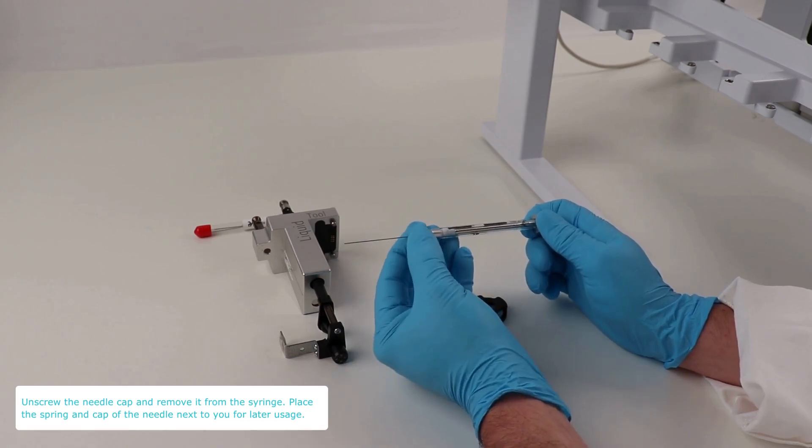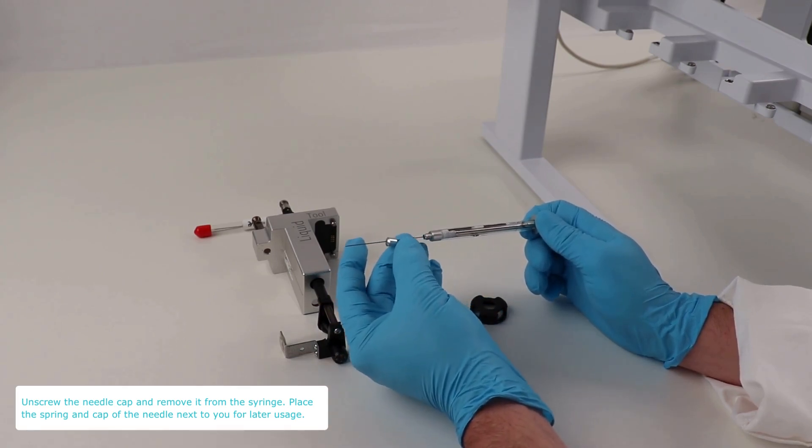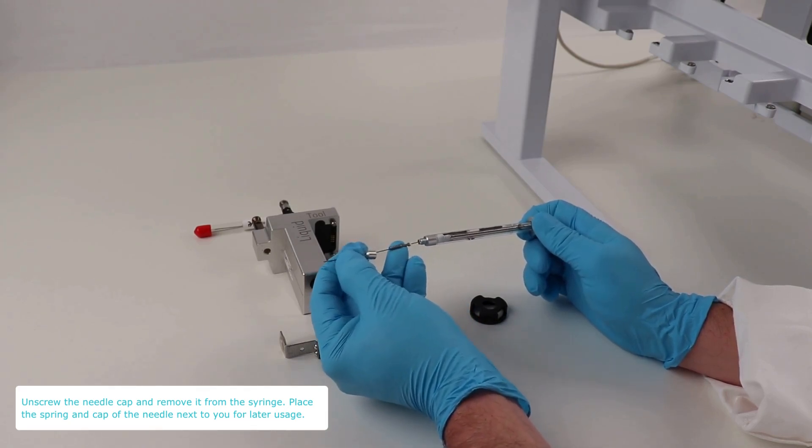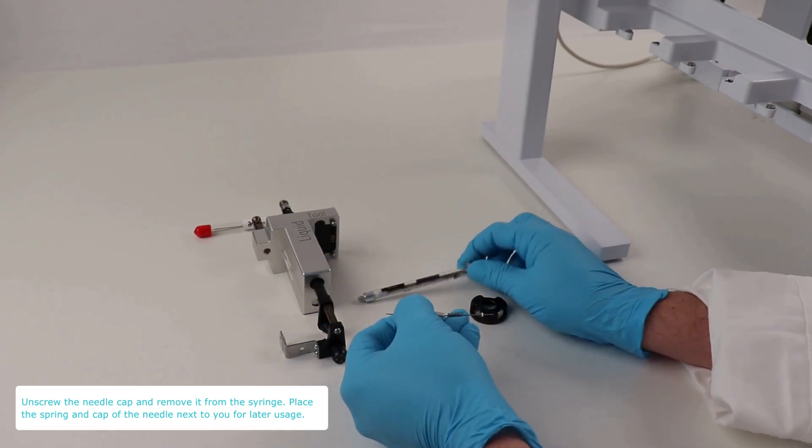Unscrew the needle cap and carefully remove it from the syringe. Place the cap and spring next to you as you will use them for the new needle.